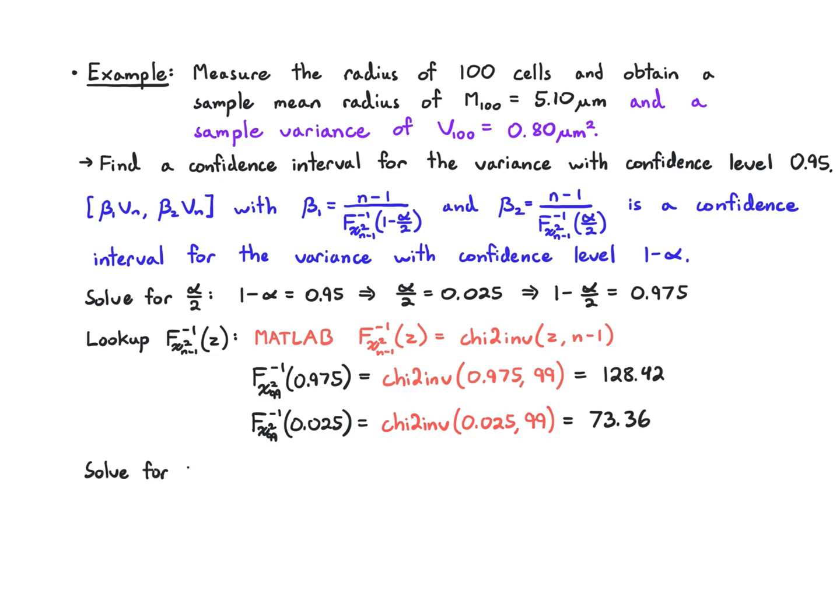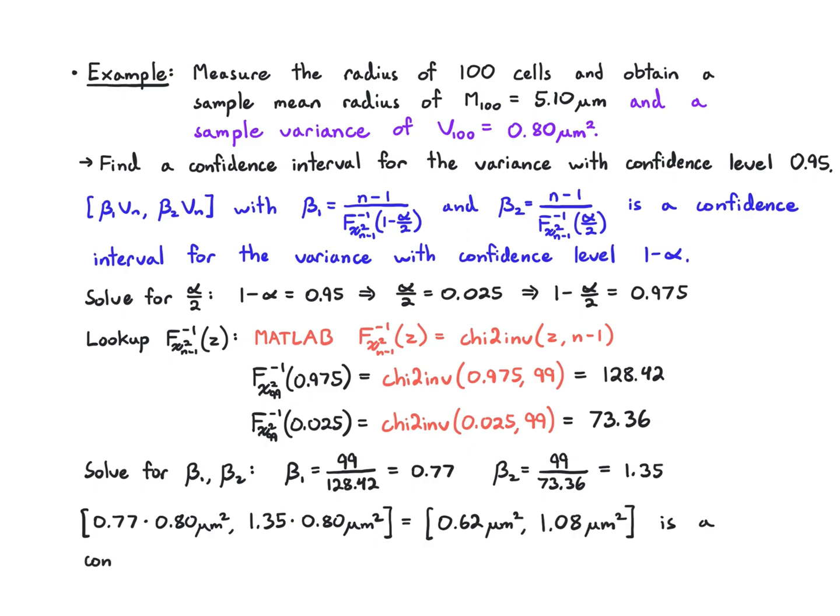So finally I'm going to solve for beta 1 and beta 2. According to that formula up there, I have n minus 1, which is 99, divided by 128.42. That's 0.77. And for beta 2, I do the same calculation but use 73.36. I get 1.35. So 0.77 times my sample variance up to 1.35 times my sample variance is my confidence interval. I can work out what those multiplications are and I get 0.62 up to 1.08 micron squared as a confidence interval for the variance with confidence level 0.95.